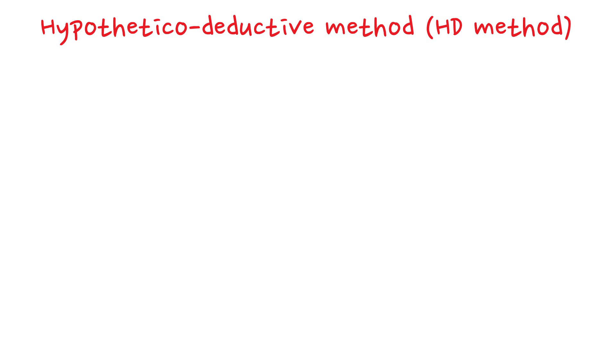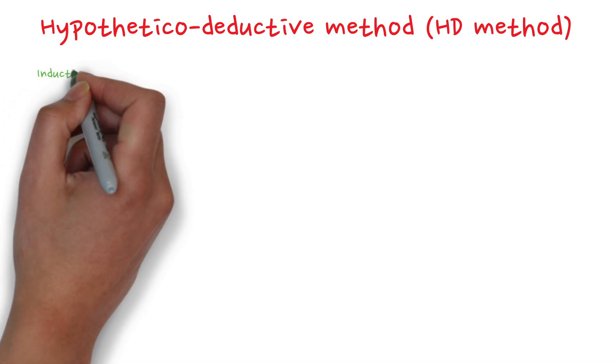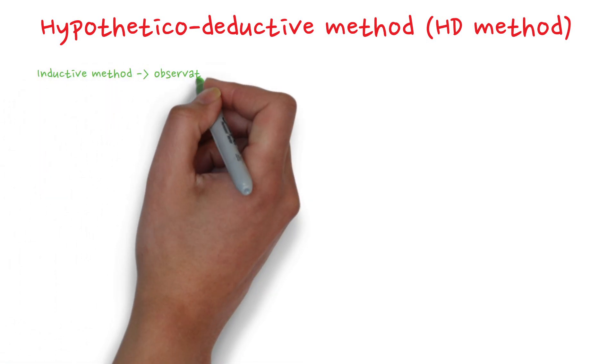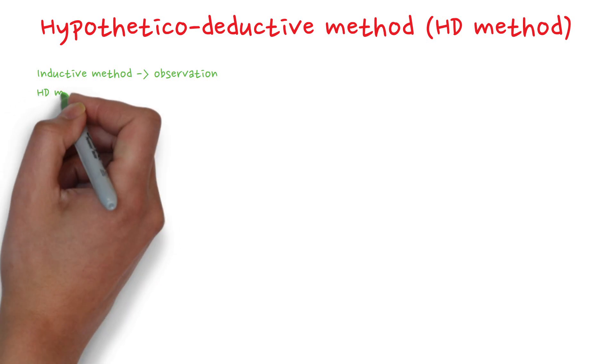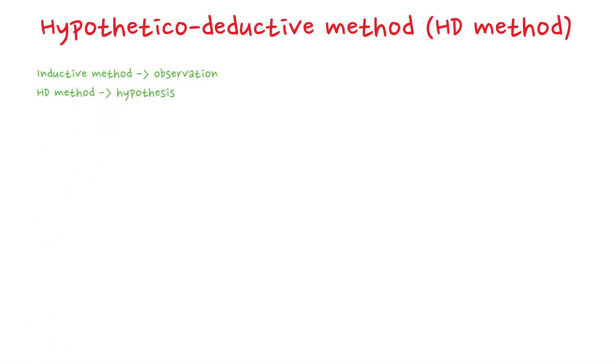However, unlike the inductive method, which begins with observations and builds toward generalizations, the HD method starts from a different point. Its foundation is not observation but rather a hypothesis that researchers aim to test and potentially generalize. This shift in starting point highlights a key difference in philosophical perspective.